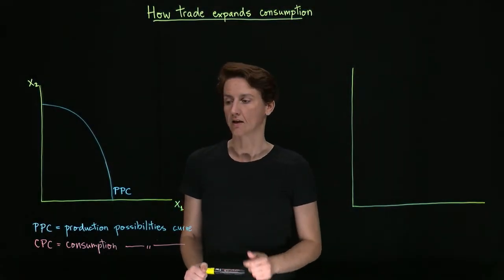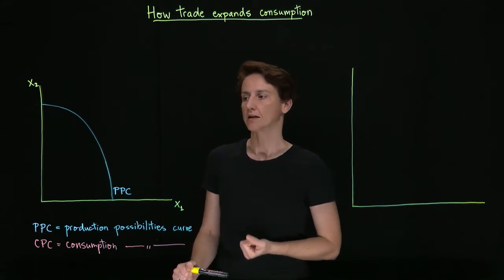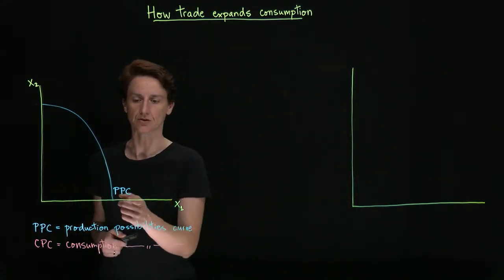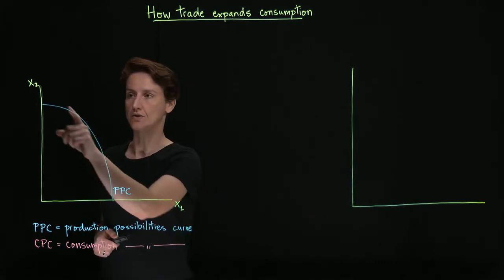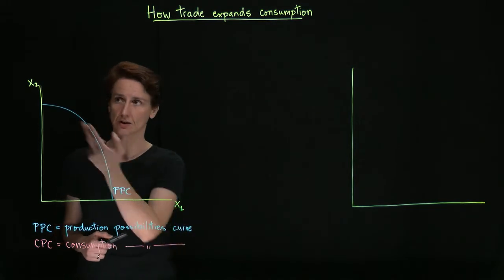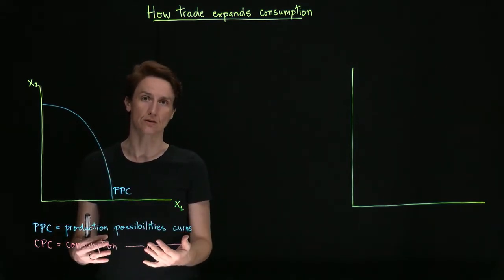Today we're going to see how trade can expand a country's consumption options beyond what it can produce. We're starting with the country's production possibilities curve, which shows us all of the combinations of goods that the country can produce while utilizing its full resources.